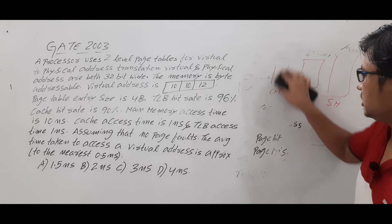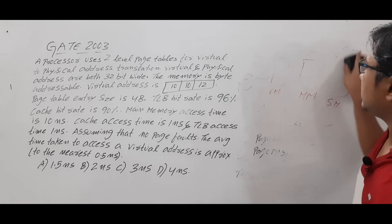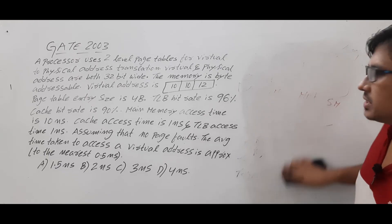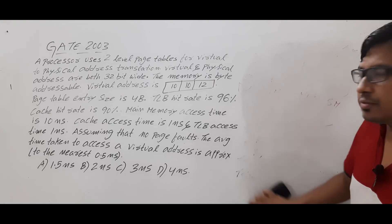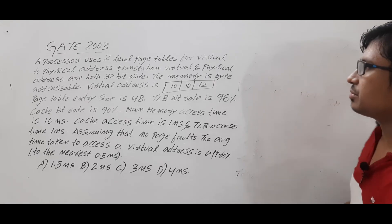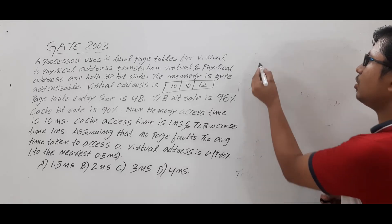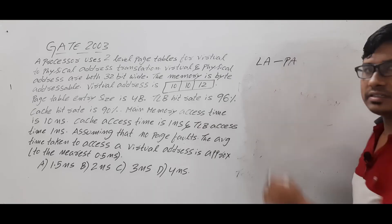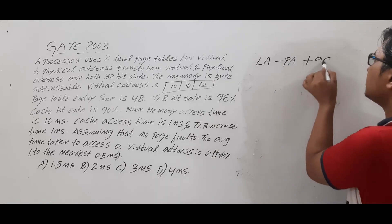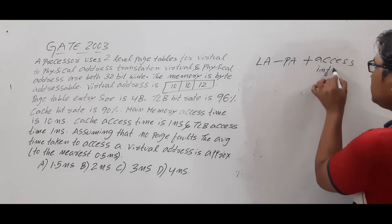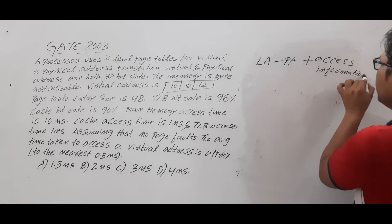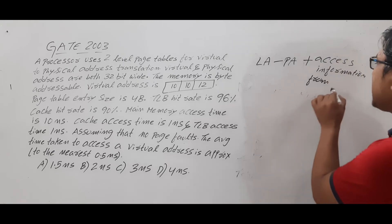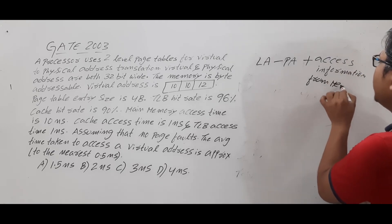Now let me solve the question. The TLB hit rate is 96%. To access particular information, the CPU generates a logical address. We need to convert the logical address to a physical address and then access the information — from cache memory if available, or from main memory otherwise. Since there are no page faults, whatever information we search for will be in main memory.